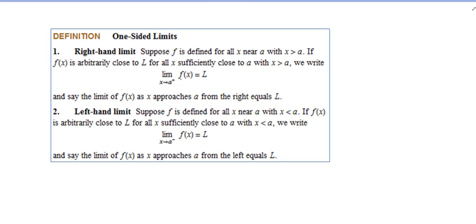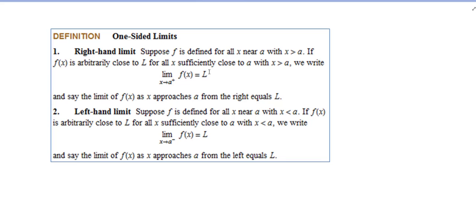Our right-hand limit is essentially when you are really close to A, but you are to the right of A. X is greater than A means to the right of A. Then the Y values that are sufficiently close to the value of L will be the limit. The limit is asking you a question: what are the Y values approaching as X approaches a value, in this case A?